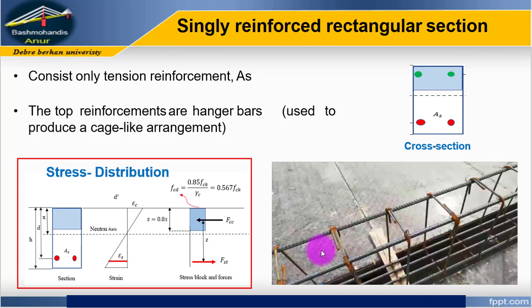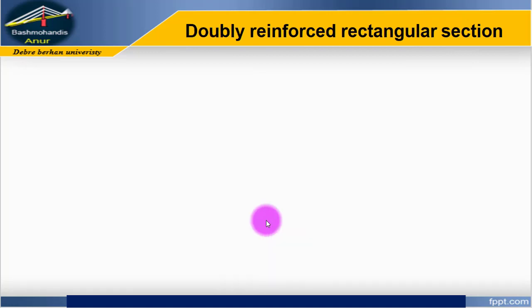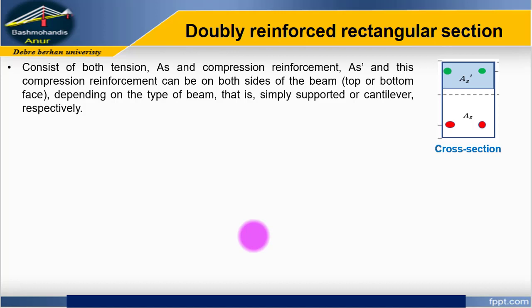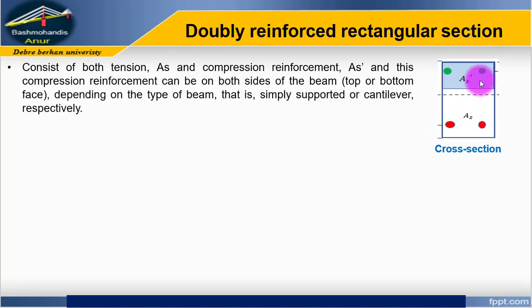A doubly reinforced section consists of both tension reinforcement, As, and compression reinforcement, As prime. This reinforcement can be on both sides of the beam — top or bottom — depending on the type of beam, whether it is simply supported or cantilever. For a simply supported beam, As prime is the compression reinforcement provided to increase the capacity of the section.